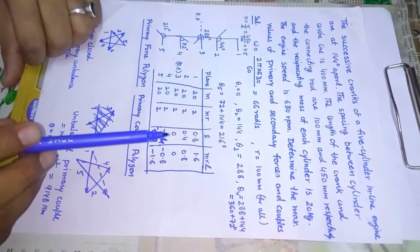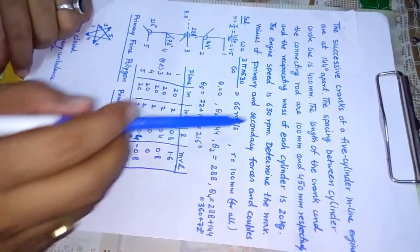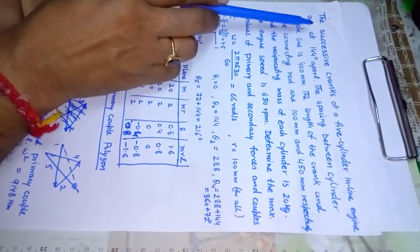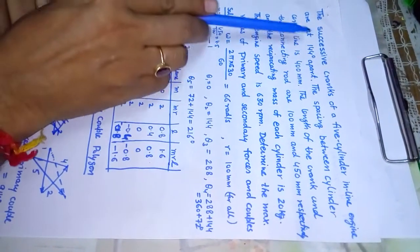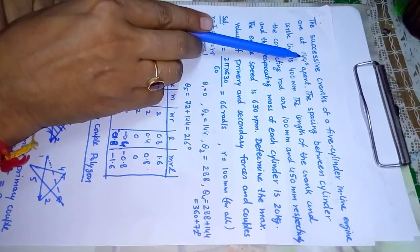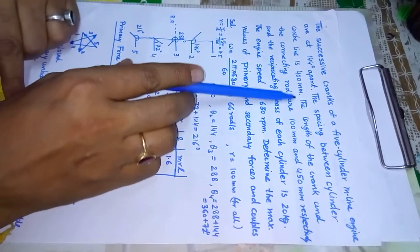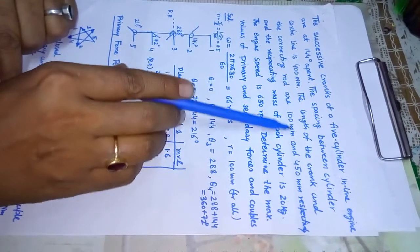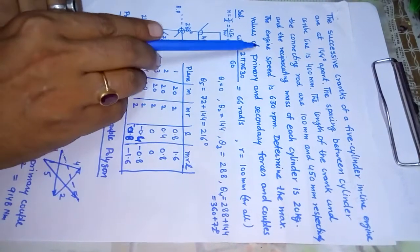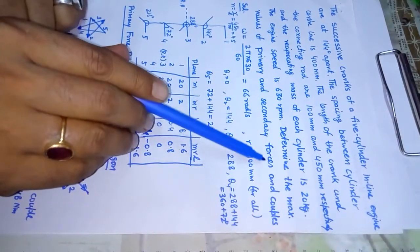Today we are picking up the problem of primary and secondary force balancing in an inline multi-cylinder engine. The successive cranks of a 5-cylinder inline engine are at 144 degrees apart. The spacing between cylinder centerlines is 400 mm. The length of the crank and connecting rod are 100 mm and 450 mm respectively, the reciprocating mass per cylinder is 20 kg, and the engine speed is 630 rpm. Determine the maximum value of the primary and secondary forces and couples.